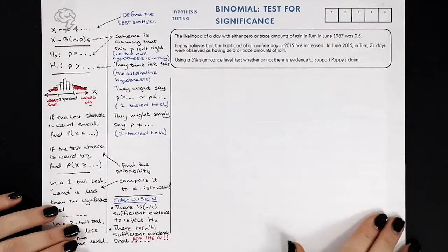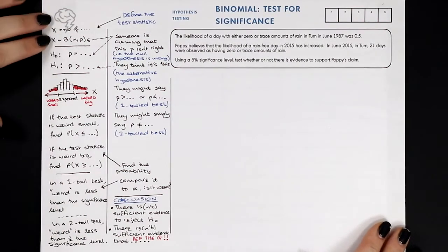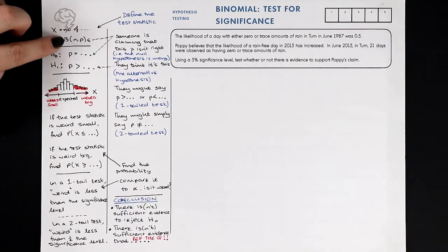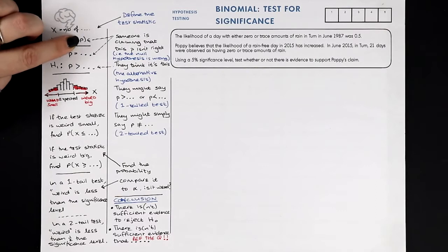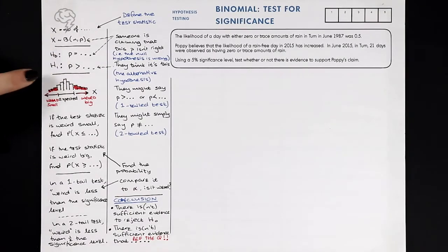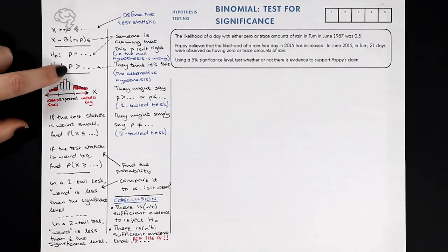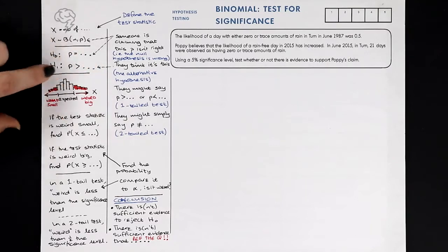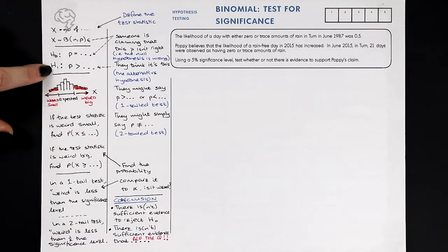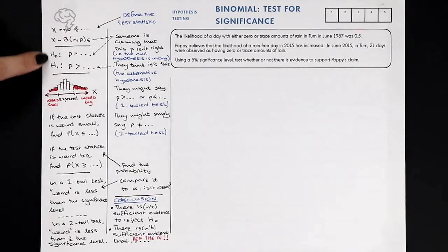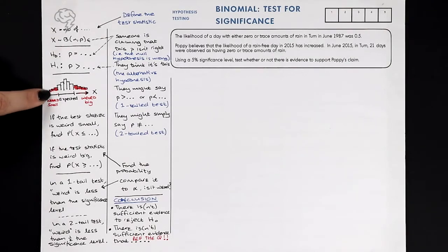So what on earth is going on with hypothesis testing? We've got a binomially distributed probability — it's the probability that's in question, not the number of trials. Somebody is saying that this probability is a certain value, and somebody else is saying no it isn't. This is called the null hypothesis, and the other claim is called the alternative hypothesis. The alternative hypothesis says that the null hypothesis — about what p is — is wrong.